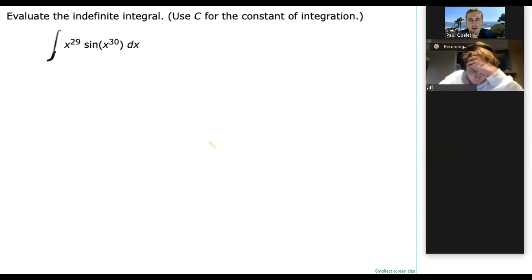So, suggestions for what u might be. Just sine x to the 30th. So, that would be a good choice for u if there was a cosine x to the 30th hanging around, because the derivative of sine is cosine. But there's no cosine to be found. So it's not a bad idea, but I'm going to say, let's not go with that.